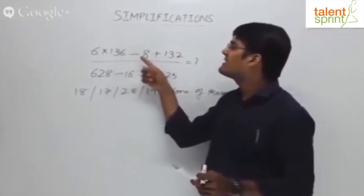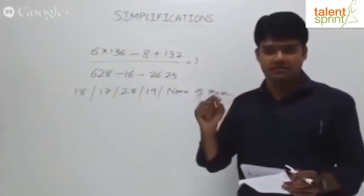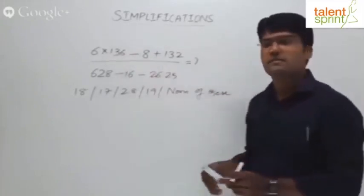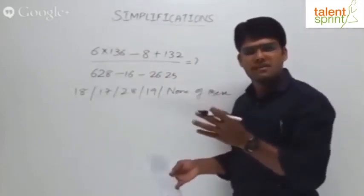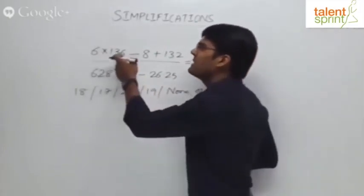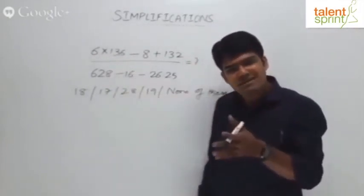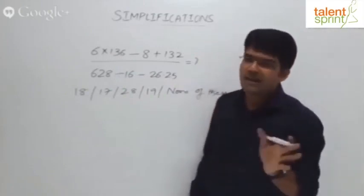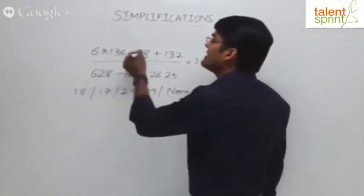Let's look at the numerator first: 6 into 136 divided by 8 plus 132. Going by BODMAS, first you have to go for division. In case of multiplication and division, you can always come from left to right. For example, even if you multiply 6 times 136 first and then divide by 8, you'll get the same answer. So either follow division first then multiplication, or proceed from left to right when it's only divisions and multiplications.